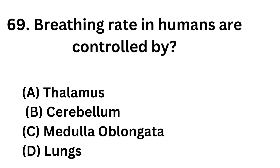Question number 69. Breathing rate in humans is controlled by: Option A: Thalamus. Option B: Cerebellum. Option C: Medulla Oblongata. Option D: Lungs.